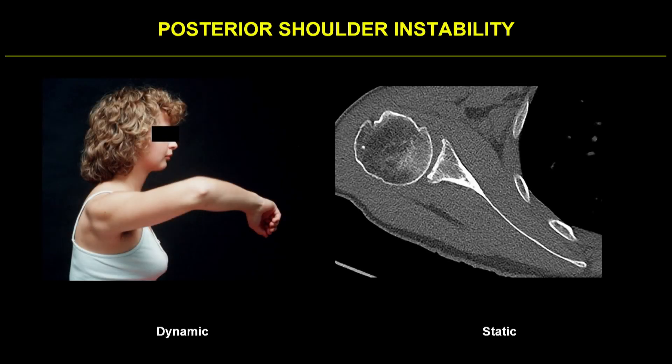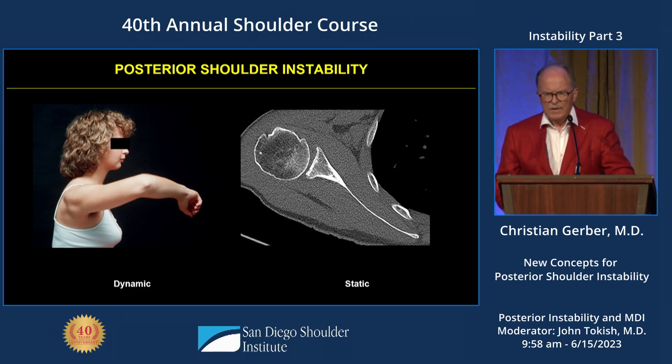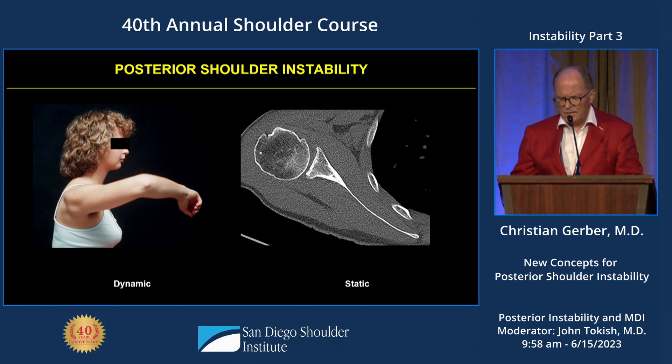We think of posterior instability in three terms. Number one, the dynamic instabilities, which are recurrent posterior instability, very often positional. Or the static posterior instability, which is an instability which does not have instability symptoms but has some pain and the head is decentered posteriorly.